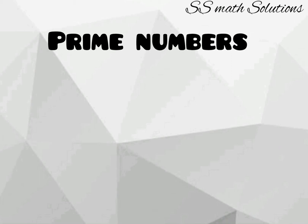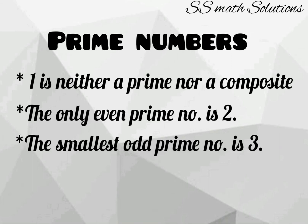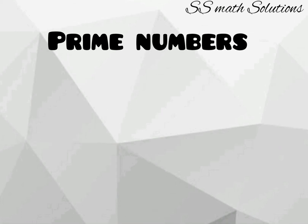Here are some facts related to prime numbers. First, one is neither a prime number nor a composite number. Second, the only even prime number is two — except two, all prime numbers are odd. And the smallest odd prime number is three.